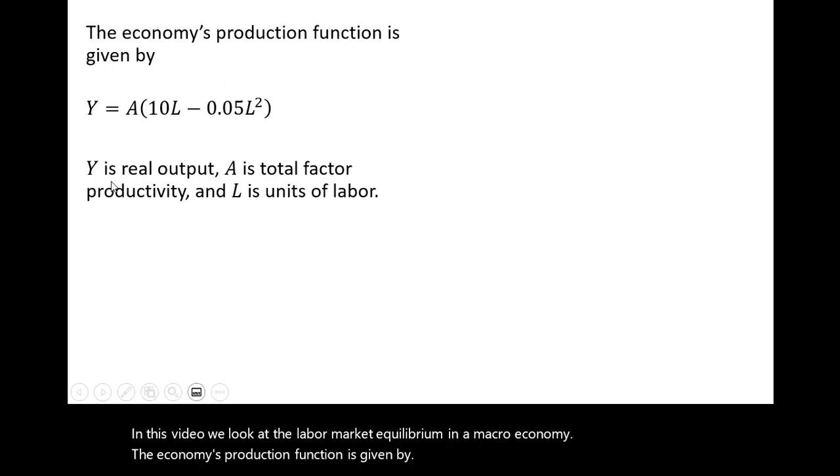The economy's production function is given by Y = A(10L - 0.05L²). Y is real output, A is total factor productivity, and L is units of labor.